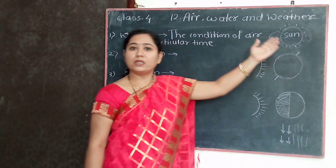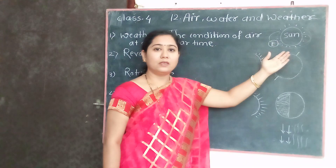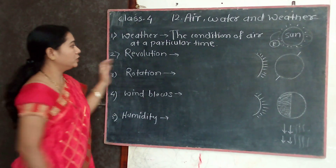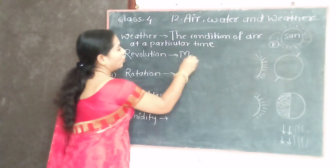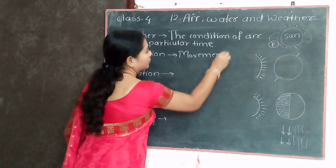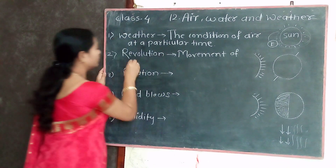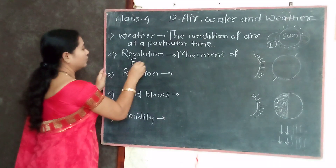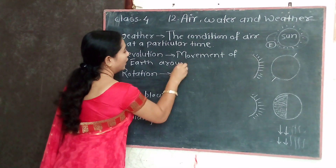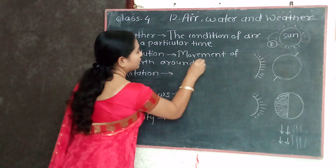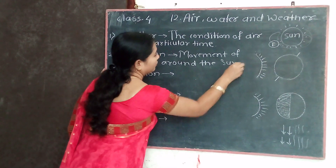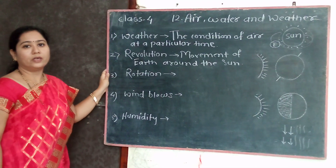Our earth is moving around the sun. This movement is called revolution. The movement of the earth around the sun is called revolution.